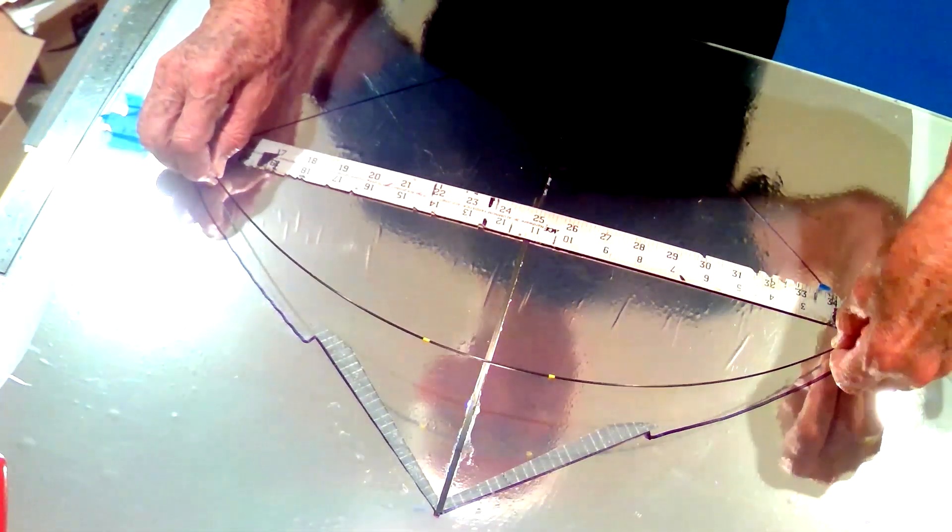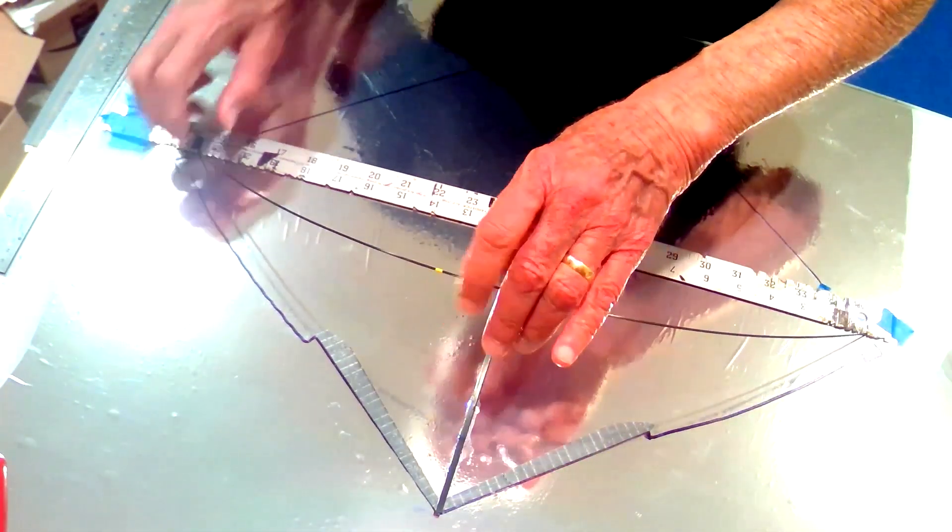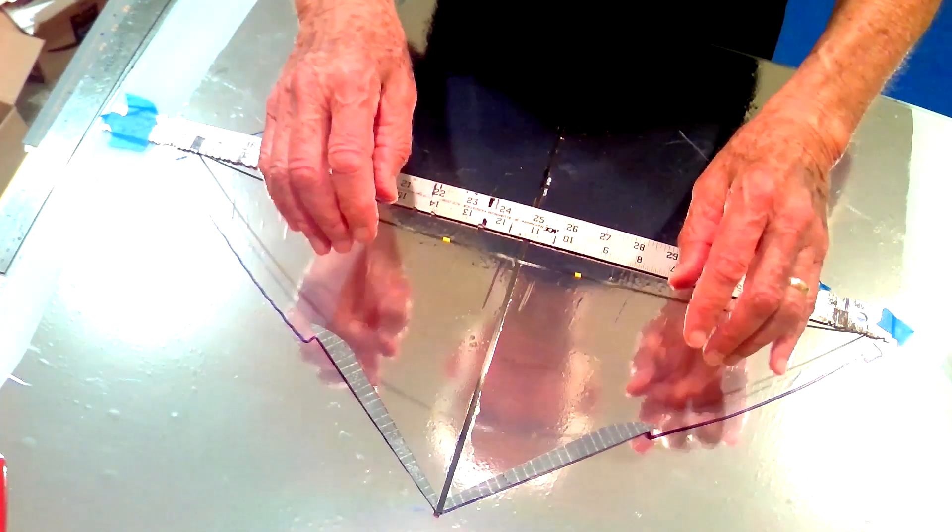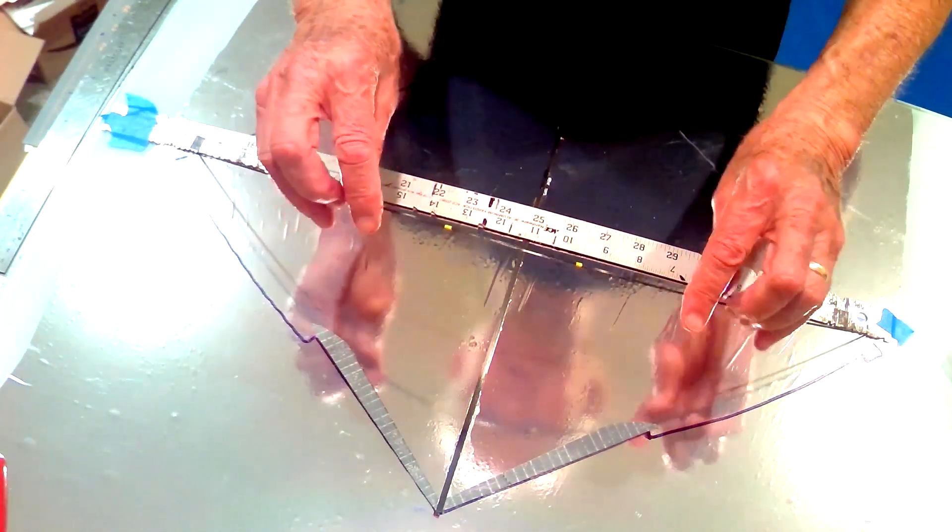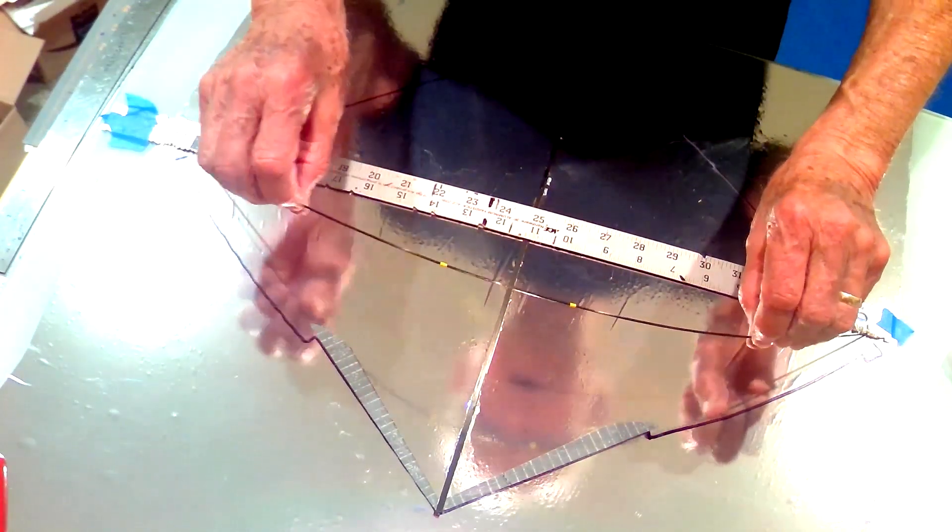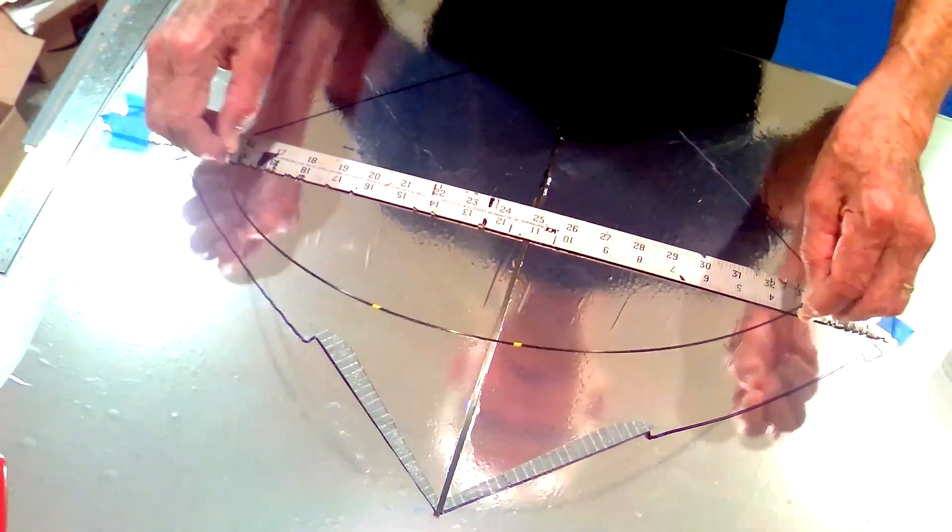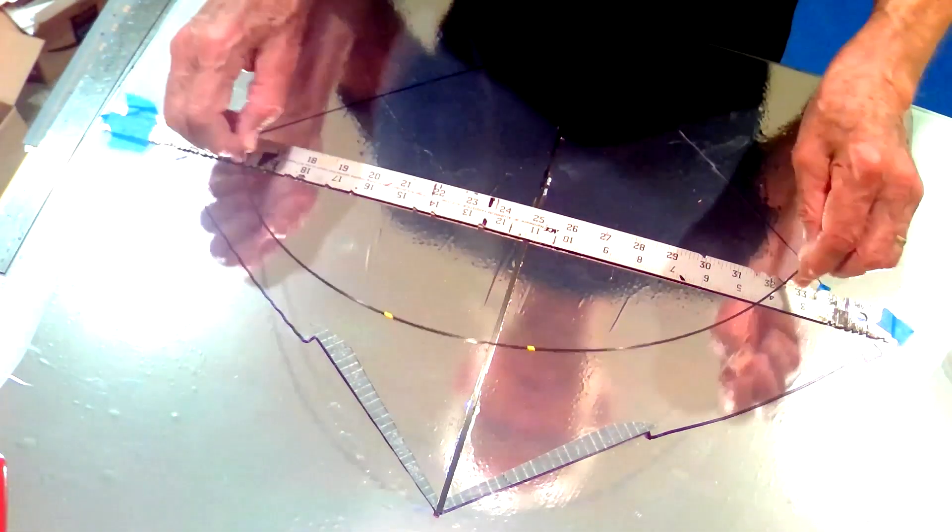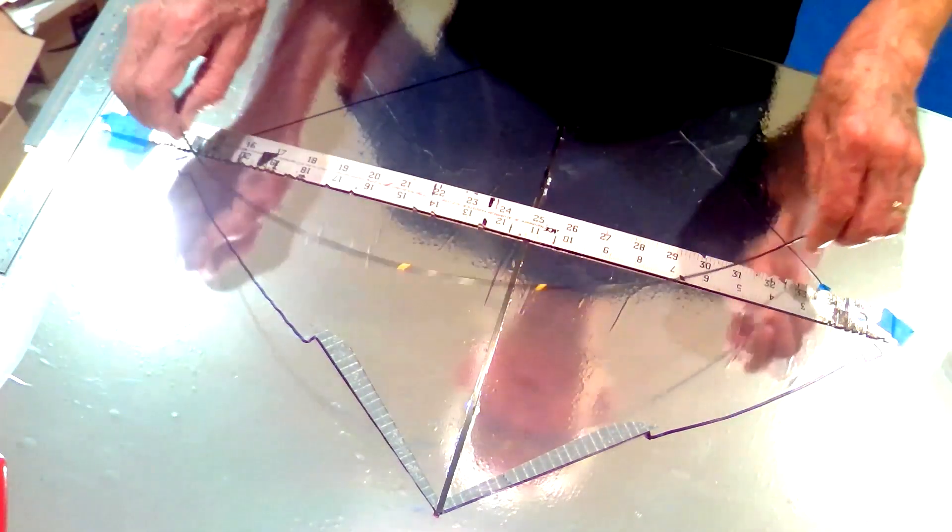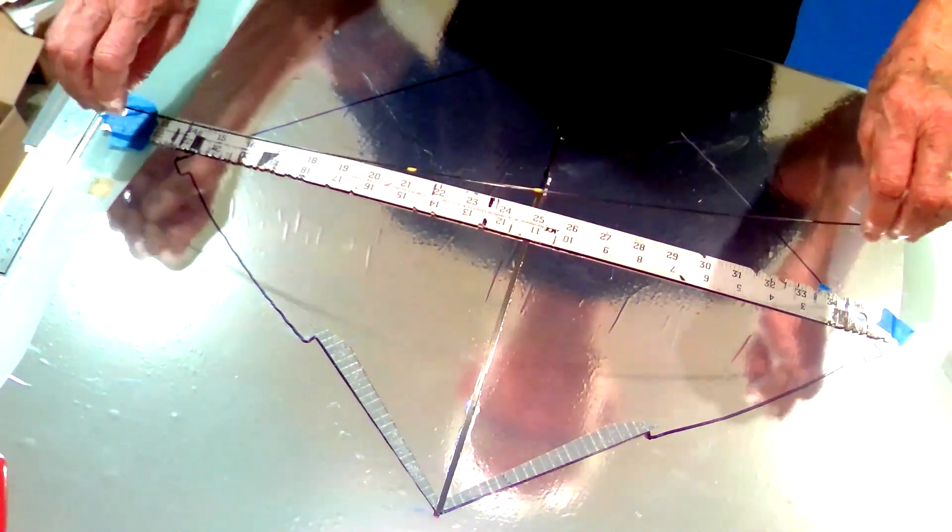And the other thing is when the bow is in here like this, it is free to rotate around its own axis. And carbon fiber rods are not in any way round. They look round, they feel pretty round, but they aren't.